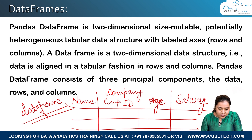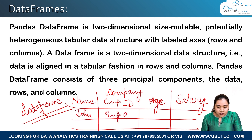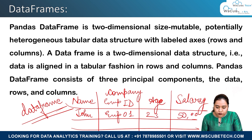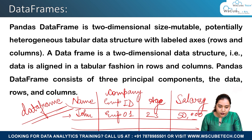The data inside them — for example, John whose ID is emp01, whose age is 23, and the salary is 50,000 — this is the data. So rows, columns, and the data together form a DataFrame.